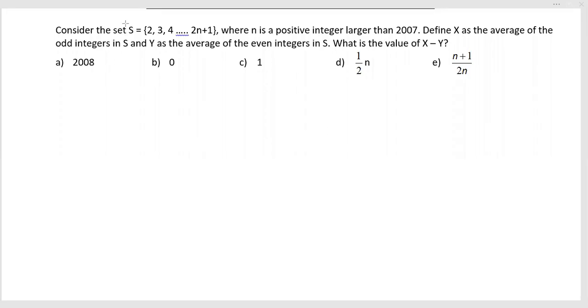Here consider the set S. S is a set where we can find from 2 onward: 2, 3, 4, 5, like that up to 2n+1. That means up to an odd value where n is a positive integer larger than 2007, so it's a very big set of numbers.